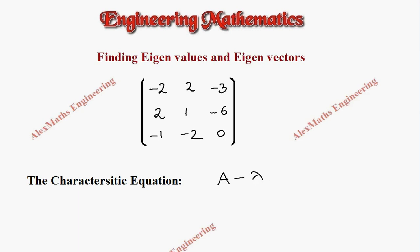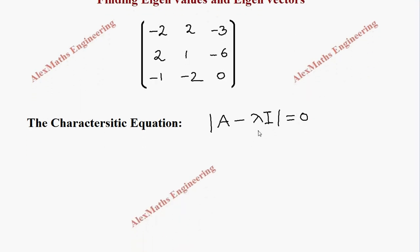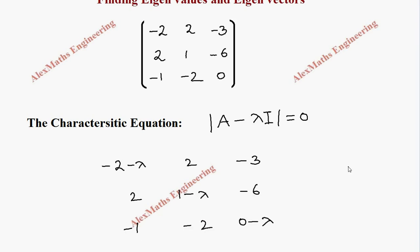When we subtract lambda I, all the leading diagonal elements will get minus lambda. So here we have 1 minus lambda, 0 minus lambda, and the rest of the elements remain as they are. This gives us the matrix A minus lambda I, and this determinant we have to equate to 0.